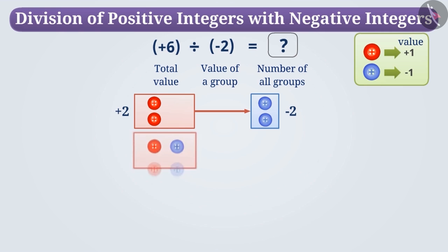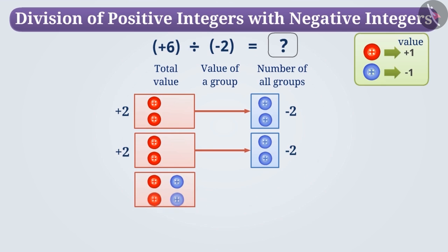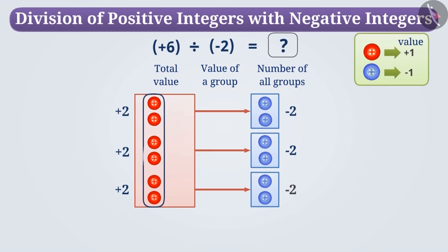Similarly, if we take two more zero pairs and subtract the value of two blue buttons, that is minus 2, then we get two more red buttons, which is plus 2. There are a total of four red buttons whose total value is plus 4. Similarly, now for the third time we will take two zero pairs and subtract the value of two blue buttons, that is minus 2. This will again give us two red buttons whose value is plus 2. Now we have a total of six red buttons whose value is plus 6. Since we have formed a group of two blue buttons three times, that is minus 2, to get plus 6, plus 6 divided by minus 2 is equal to minus 3.